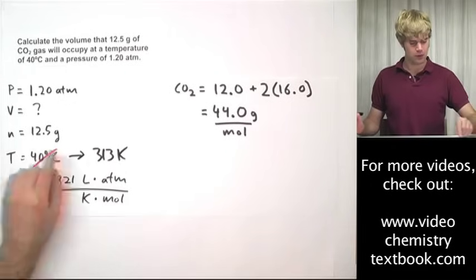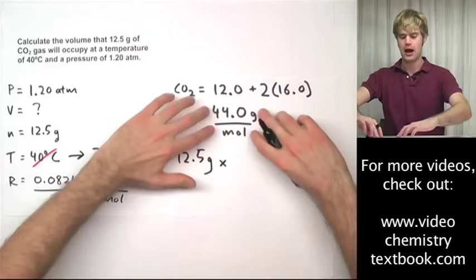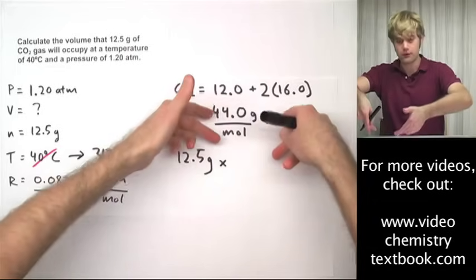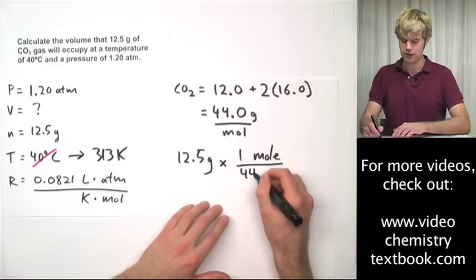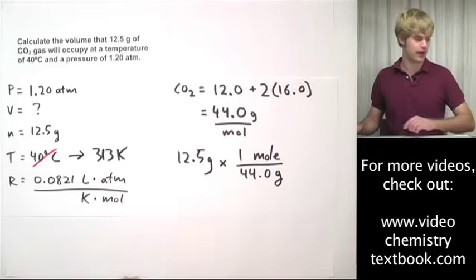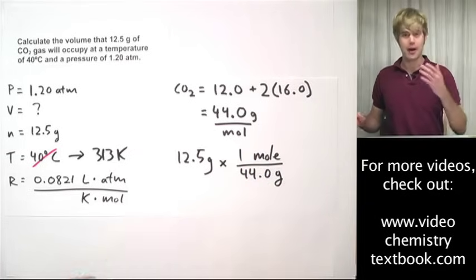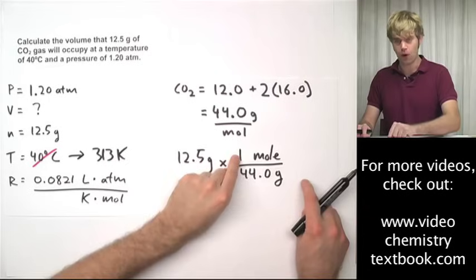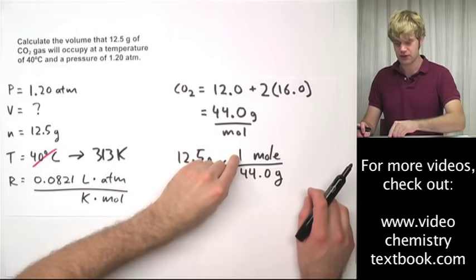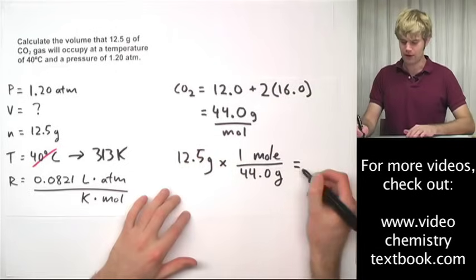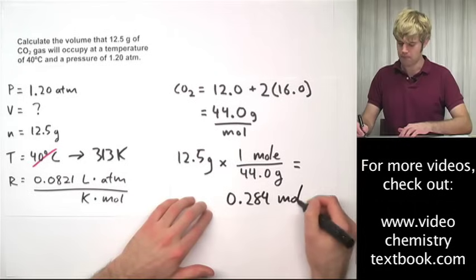So now what we're going to do is we're going to take 12.5 grams of CO2 times, I want to cancel out grams, so I'm going to flip this fraction: 1 mole divided by 44.0 grams. And the math that I'm going to do is 12.5 times 1 divided by 44. I'm going to round that to 3 significant figures. 1 mole, this is an exact counting number, so we don't worry about significant figures for this. 3 here, 3 here. So I'm going to round this to 3 significant figures and I'm going to get 0.284 moles of CO2.